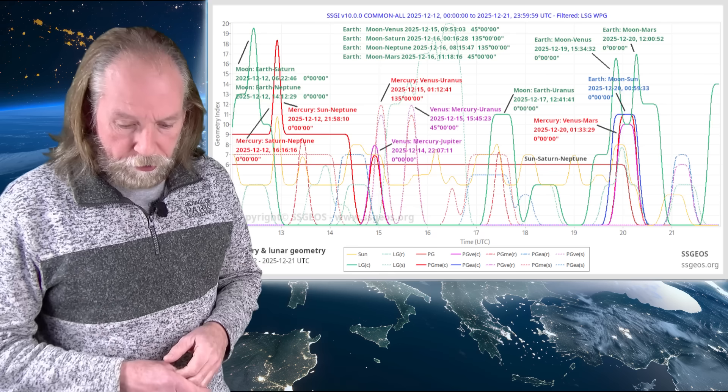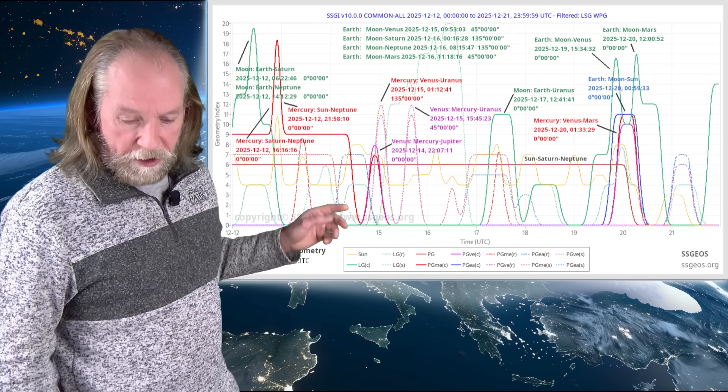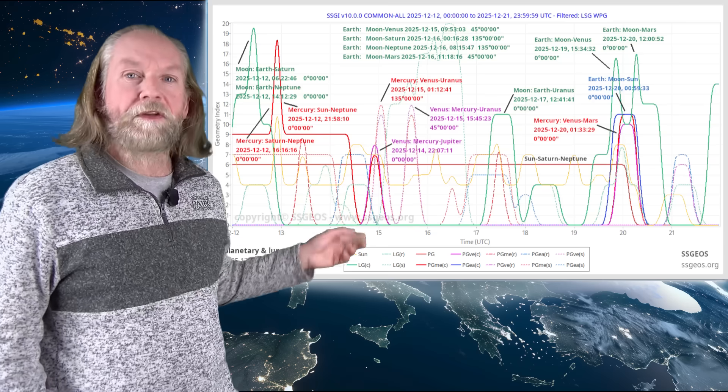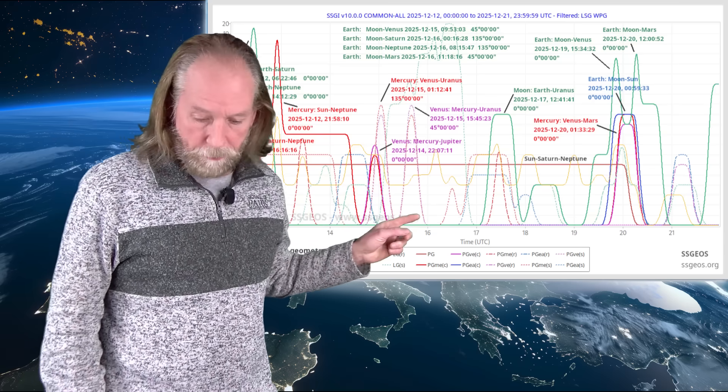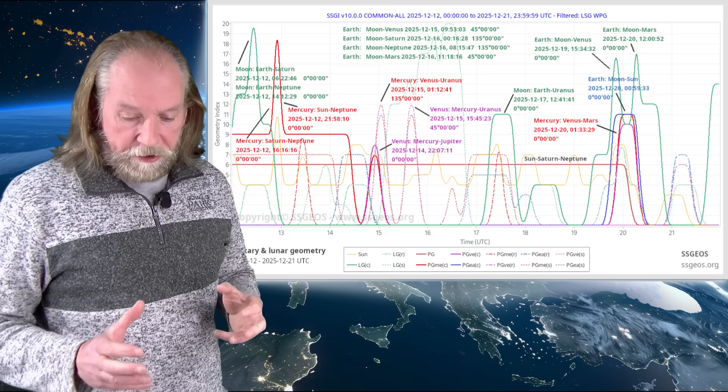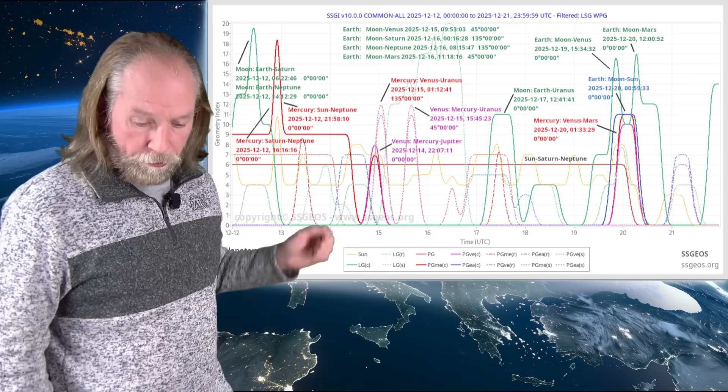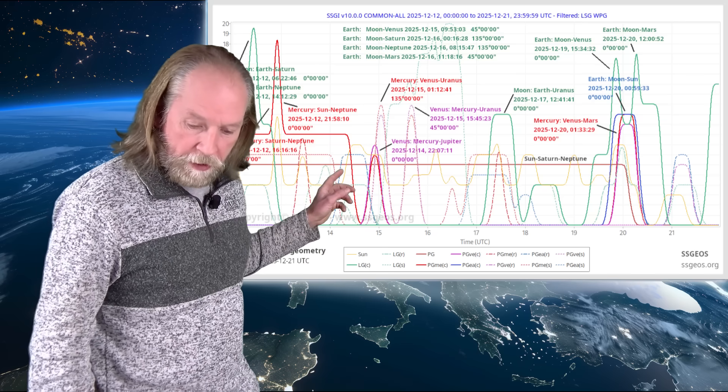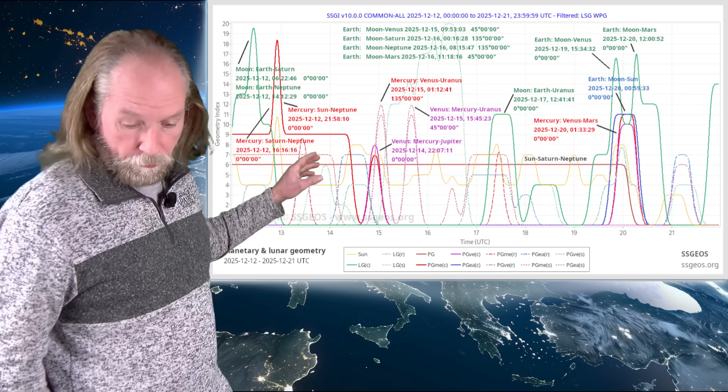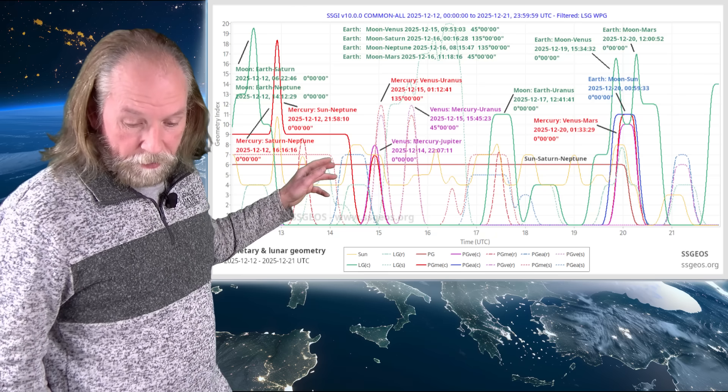Again, we have lunar geometry converging in semi-right angle geometry, especially with Venus, Saturn, Neptune and Mars. And that will be on 15 and 16 December. And it is preceded or converges with semi-right angle planetary geometry, also noteworthy, Mercury, Venus, Uranus on the 15th, early on the 15th. This is marked in red here on the map, on the SSGI graph.